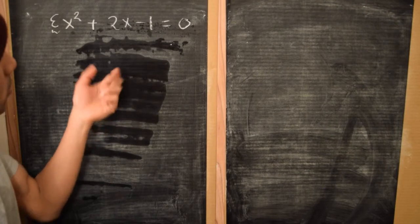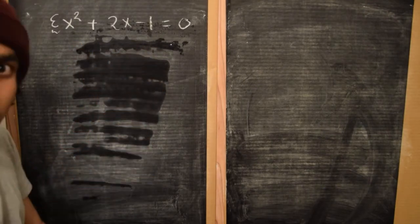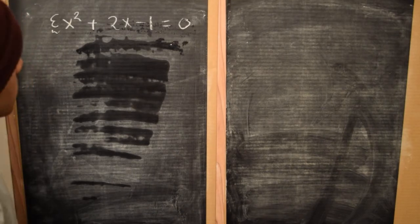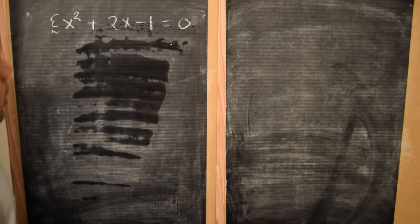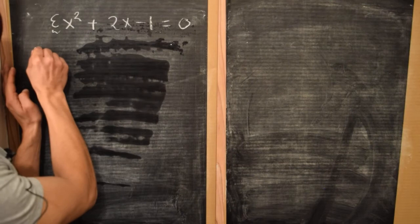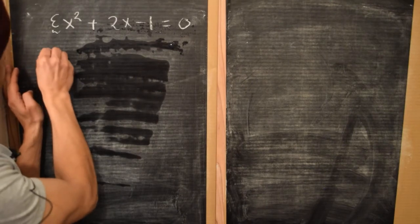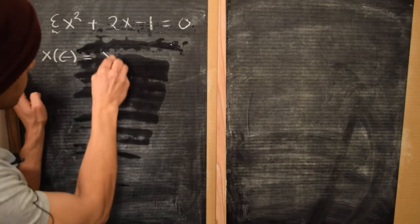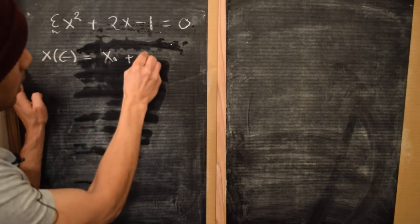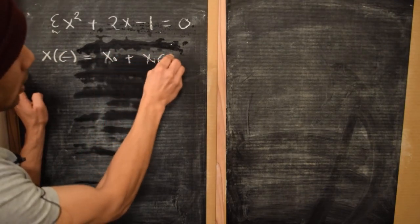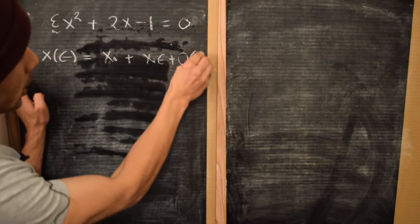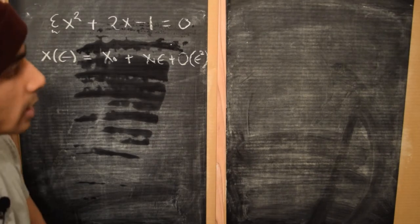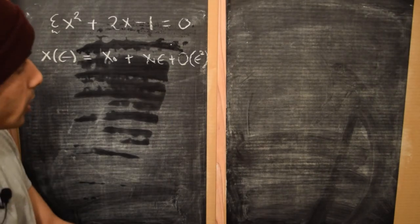Let's try and solve for the roots of this equation using the regular perturbation theory we have been discussing so far and see what happens. Again, let's assume a solution of the form x(epsilon) equals x₀ plus x₁ epsilon plus big-O of epsilon squared. We'll just be working to linear order in epsilon to see what's going on.